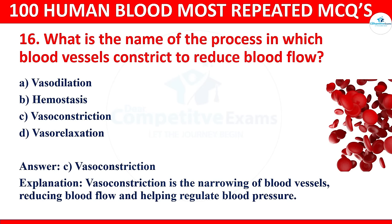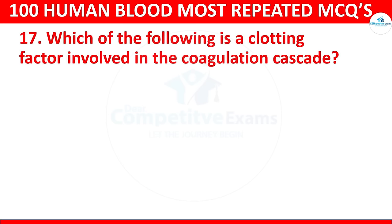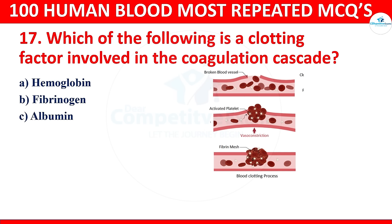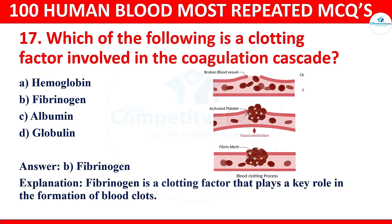Question 17: Which of the following is a clotting factor involved in the coagulation cascade? Options: hemoglobin, fibrinogen, albumin, or globulin. The correct answer is fibrinogen. Fibrinogen is a clotting factor that plays a key role in the formation of blood clots.